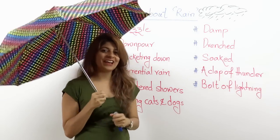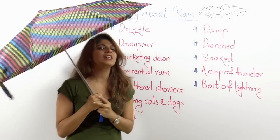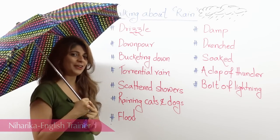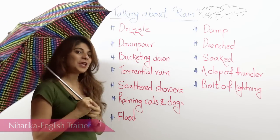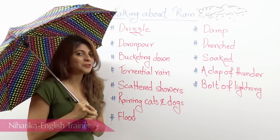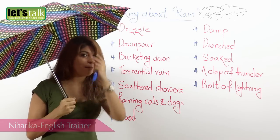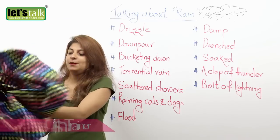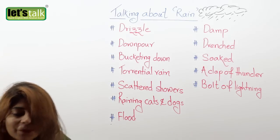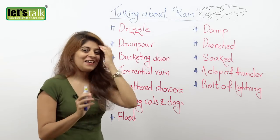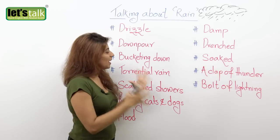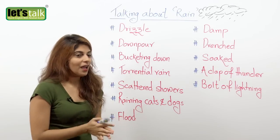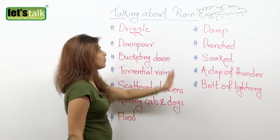Hi everyone, Niharika here. Well, it's pouring outside and that's why I have an umbrella here. In today's lesson we're gonna talk about rain. Well, before we begin, let me put this away. Okay, I'm back again. So we're gonna look at some vocabulary related to rain. Let's get started.